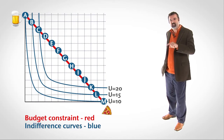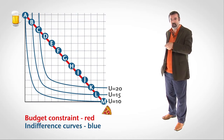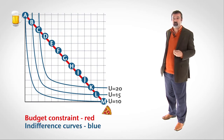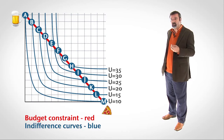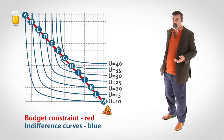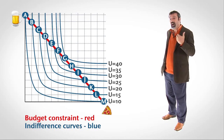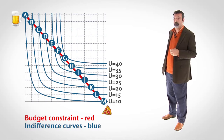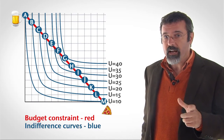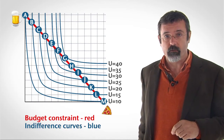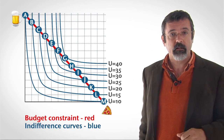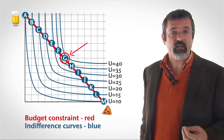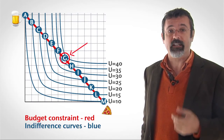Notice that bundle G costs the same as all of the other bundles, but is on the highest attainable indifference curve. Given your desires, as depicted by the indifference curves, and your capabilities, as depicted by the budget constraint, you will consume the combination of beer and pizza in bundle G.